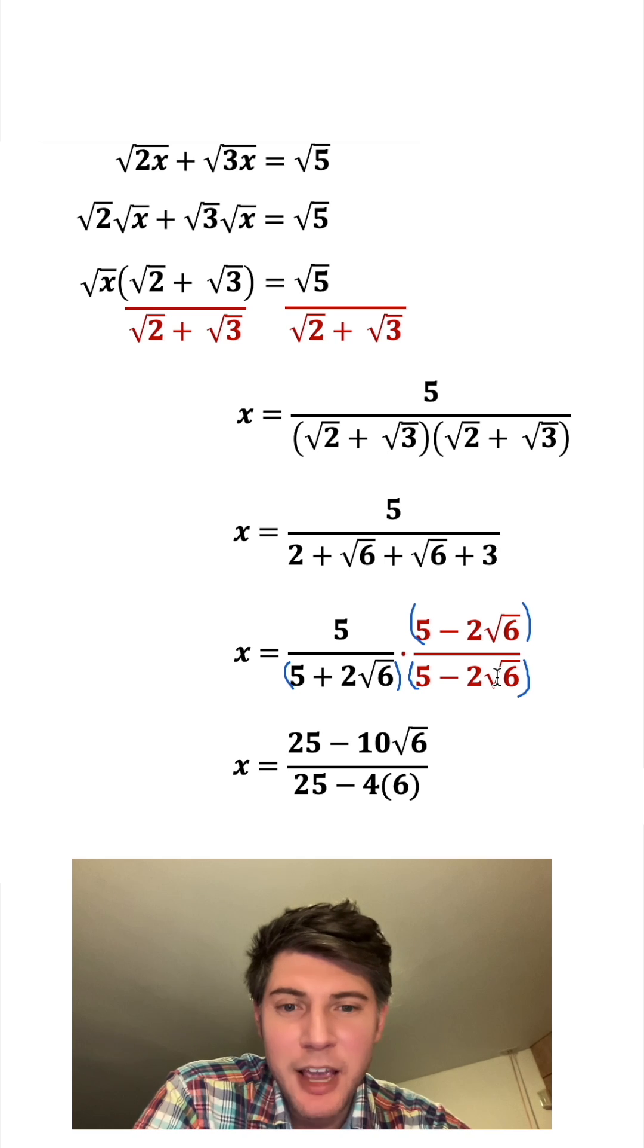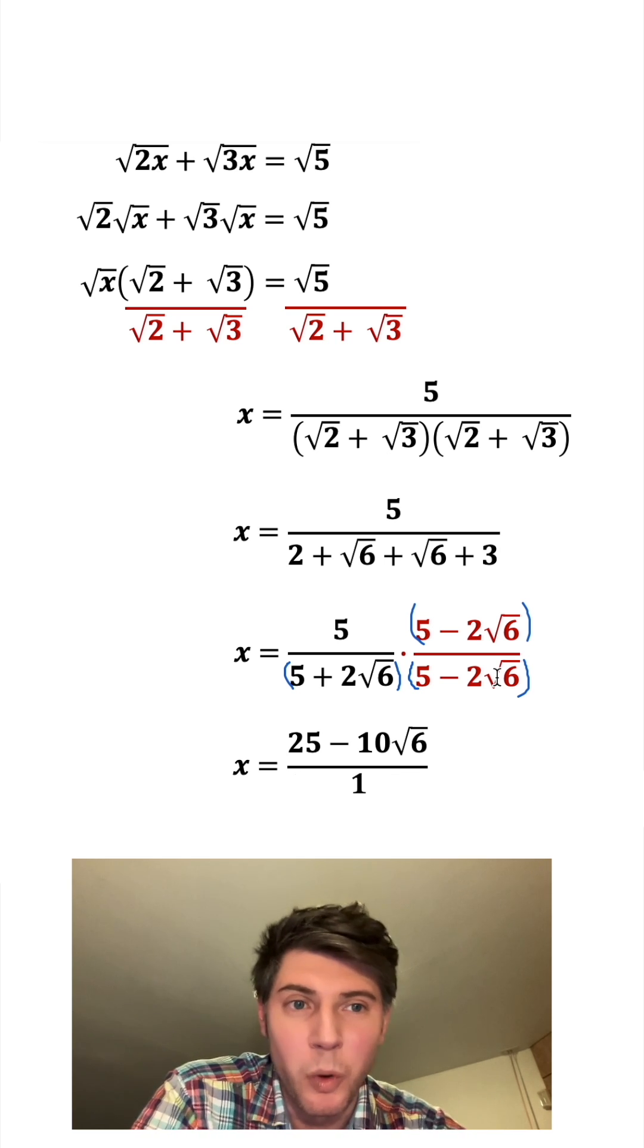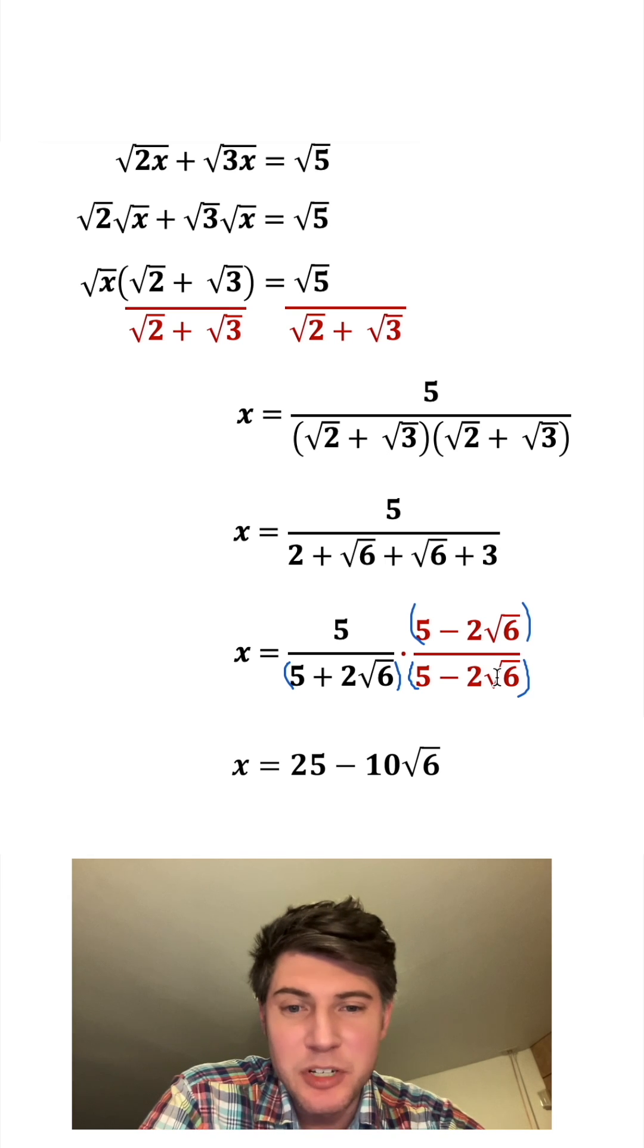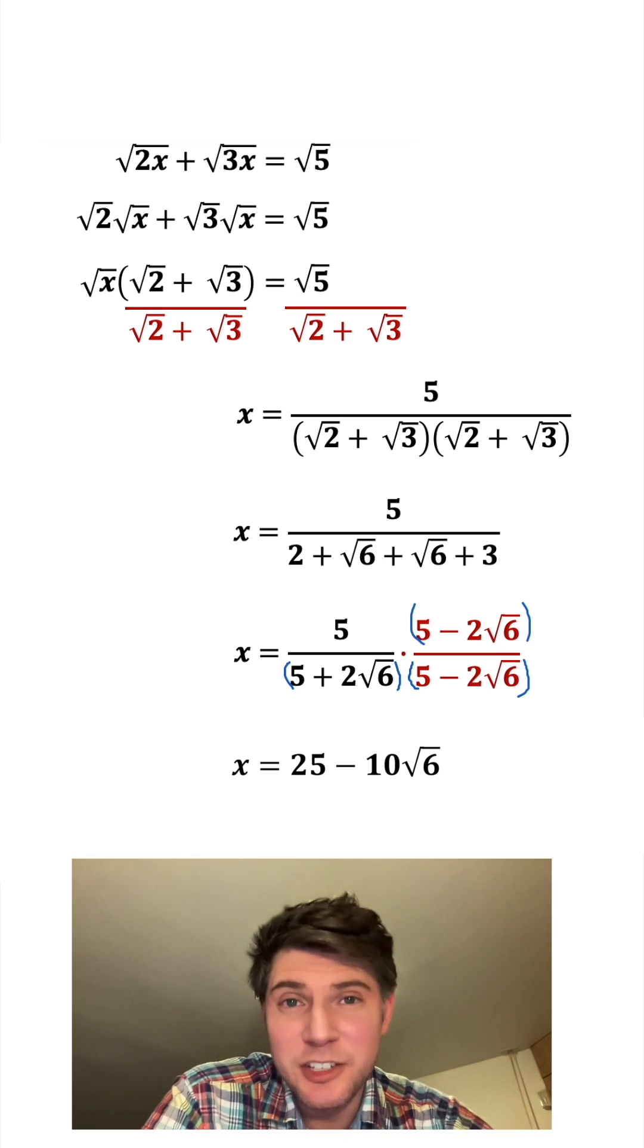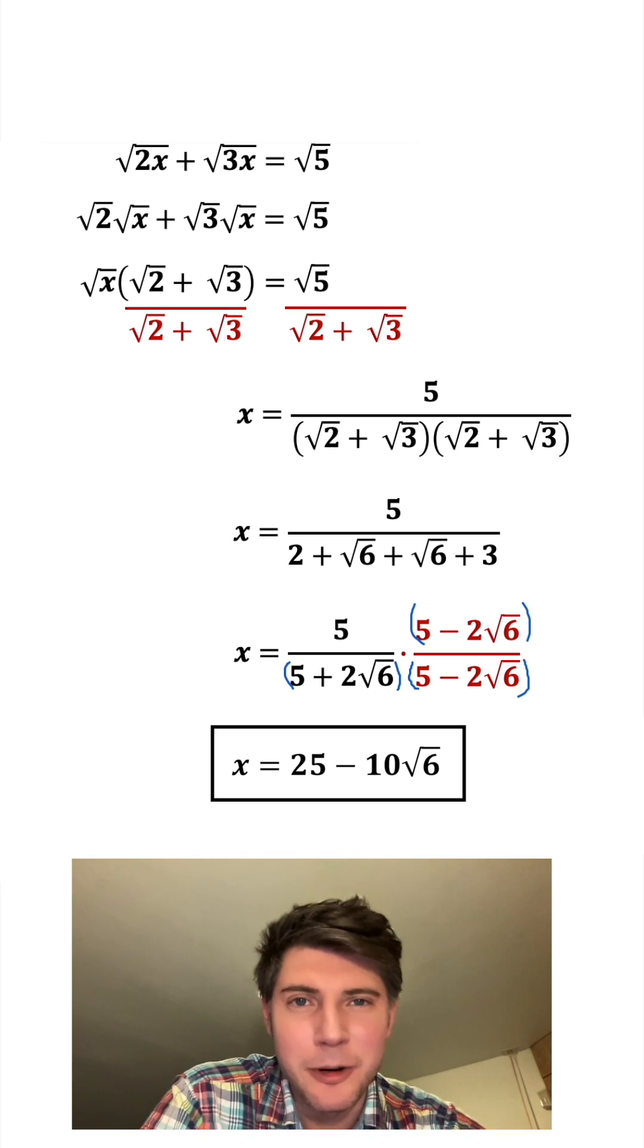These two terms cancel each other out, and 4 times 6 is equal to 24. 25 minus 24 is just 1, so we don't worry about that anymore and we're just left with 25 minus 10 root 6. And that's the answer to the question, and we can put a box around it. How exciting.